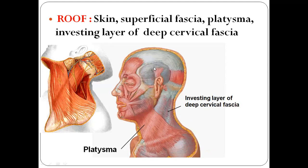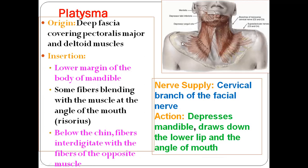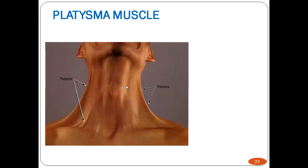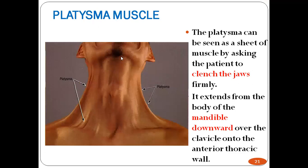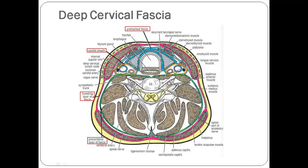The roof of the posterior triangle is formed by skin, superficial fascia, platysma, and the investing layer of deep cervical fascia. Platysma: origin — deep fascia covering pectoralis major and deltoid; insertion — lower margin of the body of the mandible, with some fibers blending at the angle of the mouth; nerve supply — cervical branch of facial nerve; action — depresses mandible and draws down the lower lip and angle of the mouth. The platysma can be seen as a sheet of muscle by asking the patient to clench the jaw firmly.